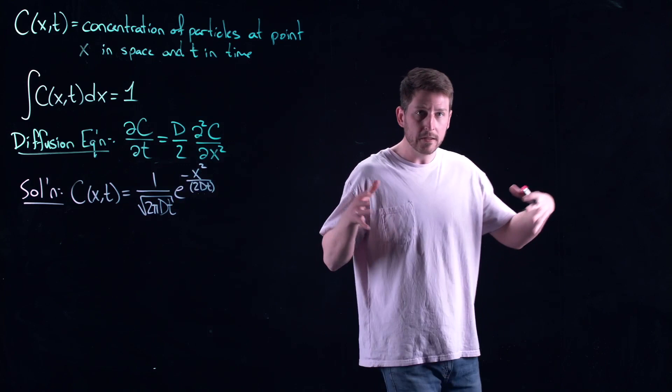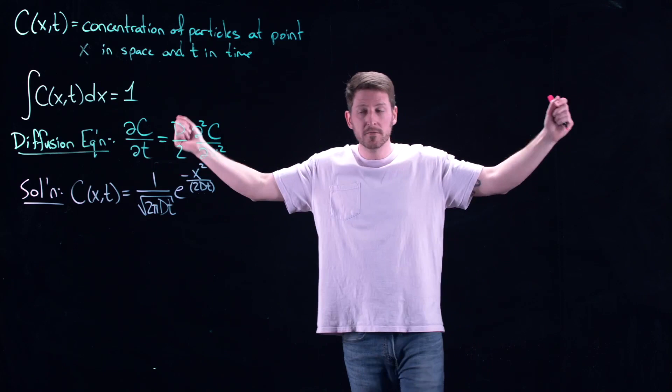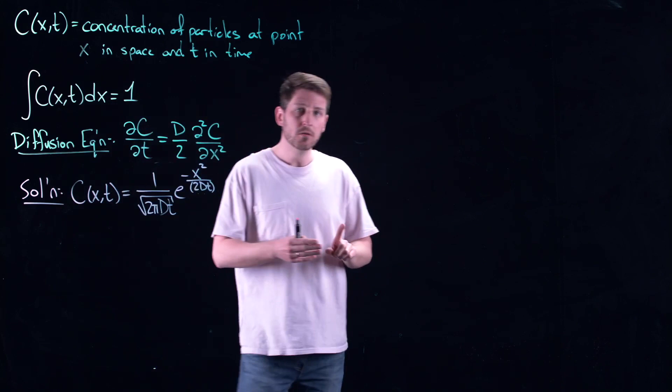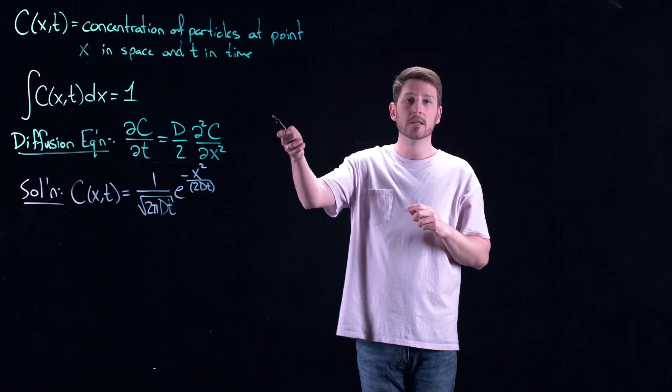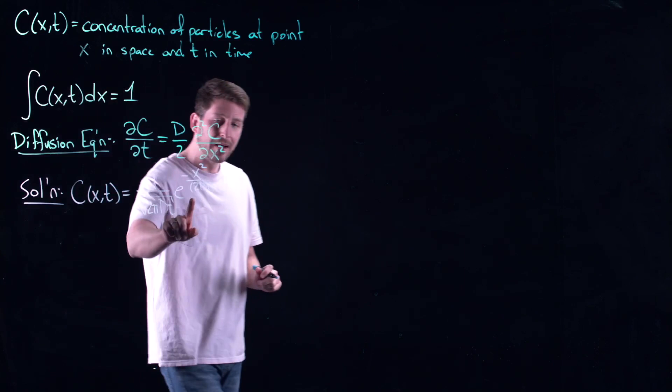If d is very small, there's some friction preventing molecules from spreading quickly. If d is very large, it's almost slippery and everybody moves really quickly. As t goes to zero, this thing concentrates around x equals zero — that's the idea behind Brownian motion. Every particle starts at a single point in space and then spreads. This is the Gaussian curve, the density of the normal distribution — a bell curve.